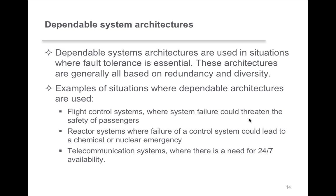Dependable system architectures are used in situations where fault tolerance is essential, keeping in mind we're trying to reduce the number of errors. The architectures are generally all based on redundancy and diversity — we build the architecture to support those two features in the hopes that we'll have, at the architecture level, some dependable structure and foundation to work on.